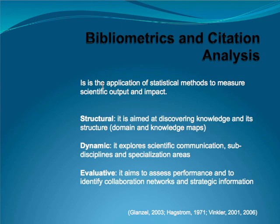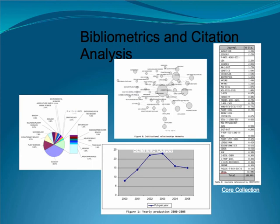Bibliometrics and citation analysis is the application of statistical methods to measure scientific output and impact. There is structural bibliometrics — aimed at discovering knowledge, its structure and dynamics, exploring scientific communication, sub-disciplines, and areas of specialization — and there is evaluative bibliometrics, which aims to assess performance and identify collaboration networks and strategic information.